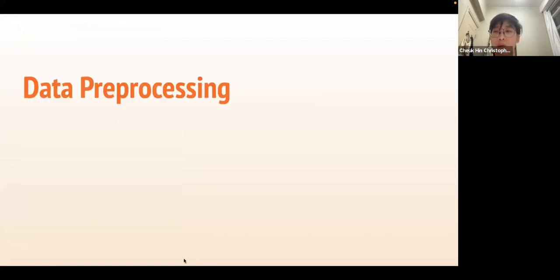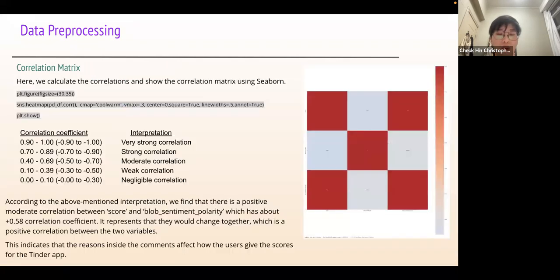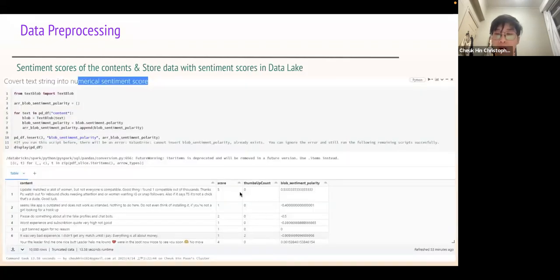For data preprocessing, we convert text string into numerical sentiment score and store the sentiment score of each content in the pandas data frame so that we can compute a correlation matrix for the numerical data. We also store the data in the data lake. You can see the block sentiment polarity as the sentiment score for each content.